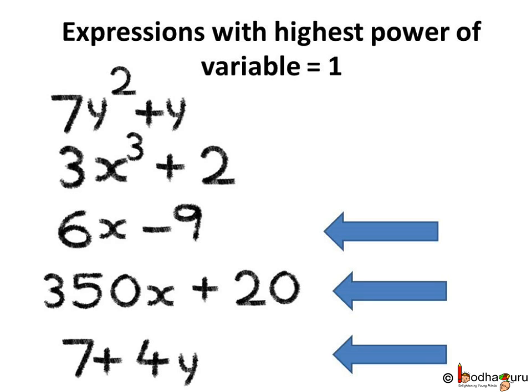Which expressions have variables with highest power equal to 1? In the expression 6x minus 9, the highest power of the variable x is 1. In the expression 350x plus 20, again the highest power of the variable is 1. Similarly, in 7 plus 4y, the power of variable y is also 1.